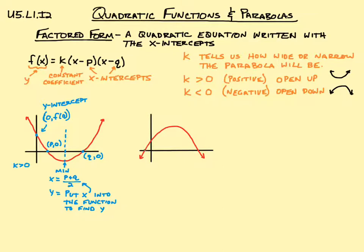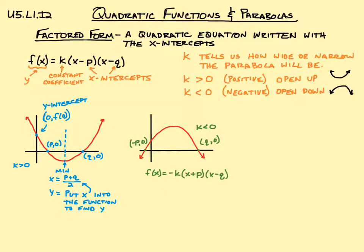Now let's look at a downward-facing parabola. In this case, we've got a negative p,0 because the x-intercept is on the negative side, and a positive q,0 for the other x-intercept. We know it opens downwards, so k has got to be less than zero. So we would have k times x plus p times x minus q — because x minus a negative p becomes x plus p.